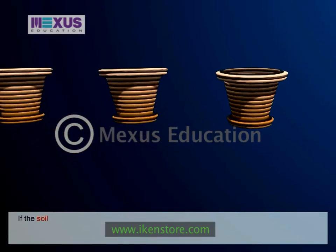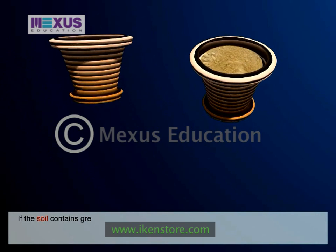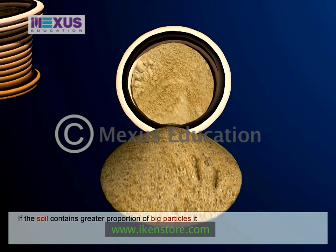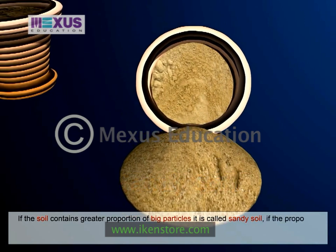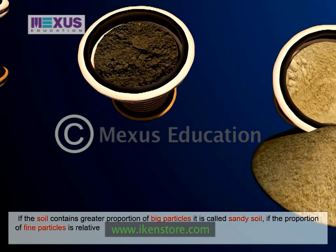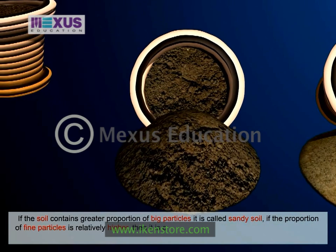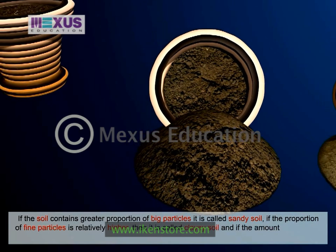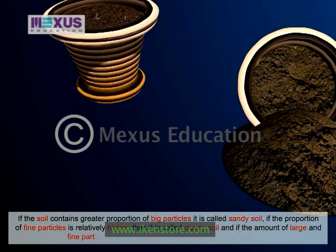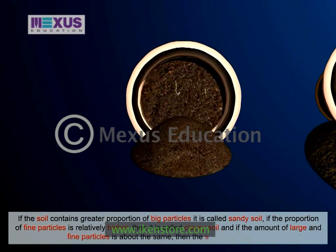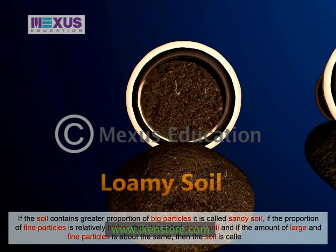If the soil contains a greater proportion of big particles, it is called sandy soil. If the proportion of fine particles is relatively higher, then it is called clayey soil. If the amount of large and fine particles is about the same, then the soil is called loamy.